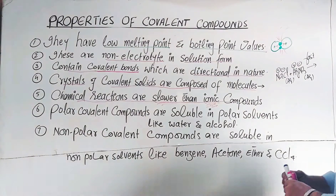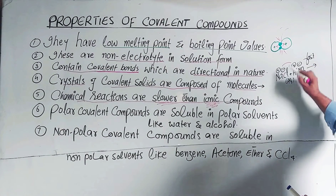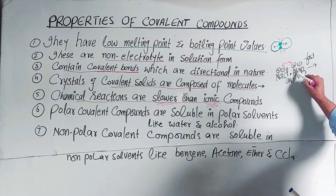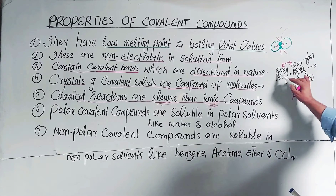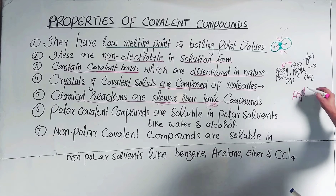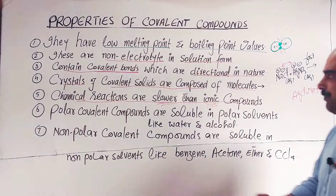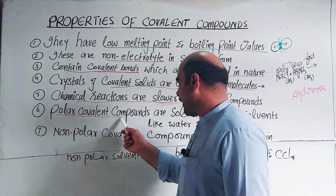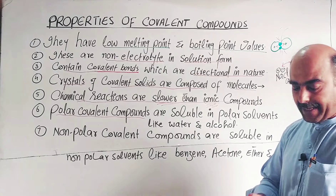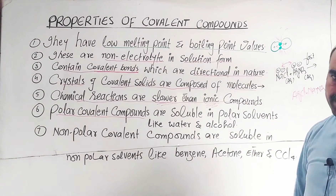So reactions between covalent molecules are slow compared to ionic compound reactions. In ionic reactions, when two solutions are mixed, opposite ions exchange and combine rapidly — for example producing silver chloride and sodium nitrate.